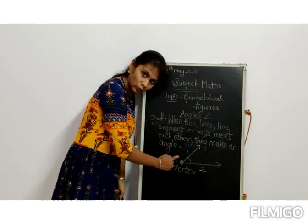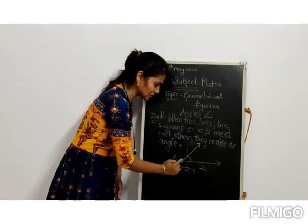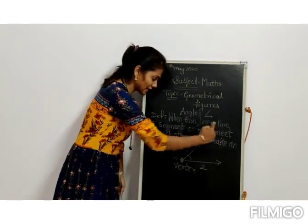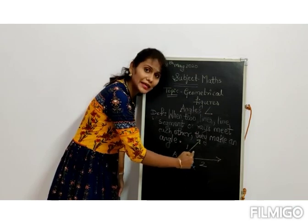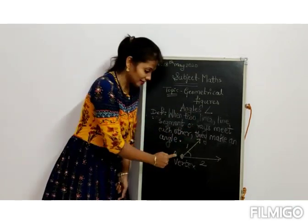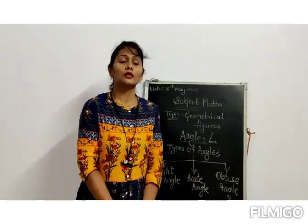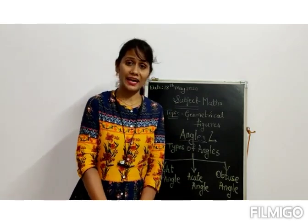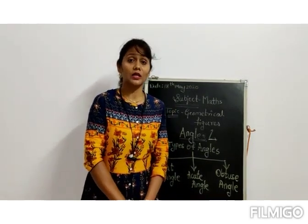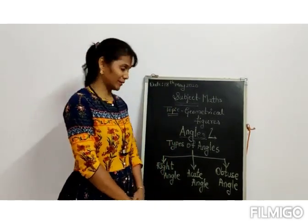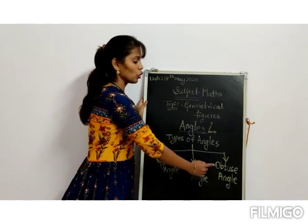Let's say it once again. Line one or ray one, line two or ray two — when they meet each other, as our definition says, when two lines, line segments, or rays meet each other, they make an angle. And this point where they meet is called the vertex. So students, in this chapter we are going to learn three types of angles: right angle, acute angle, and obtuse angle.